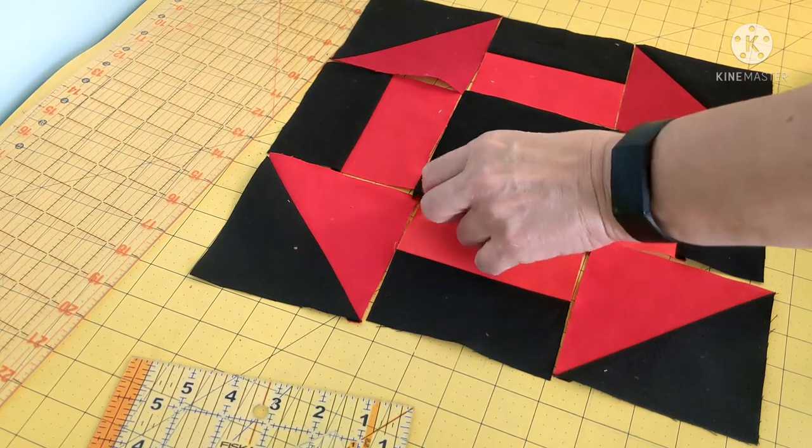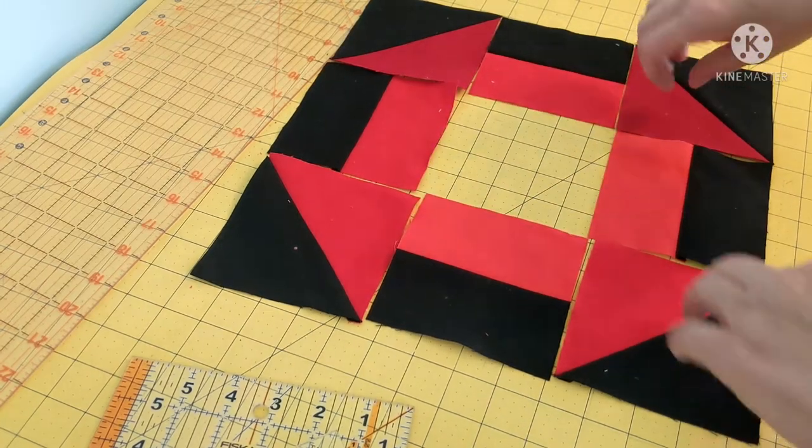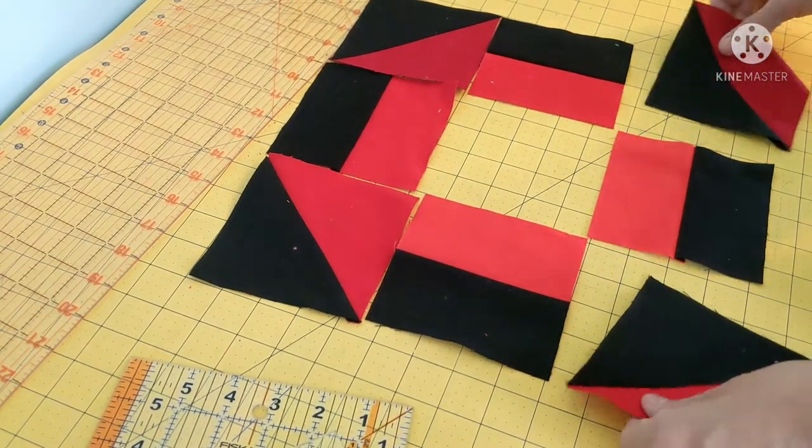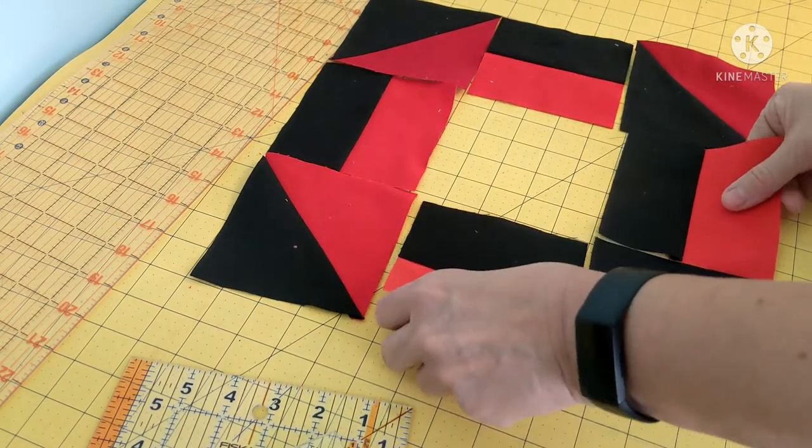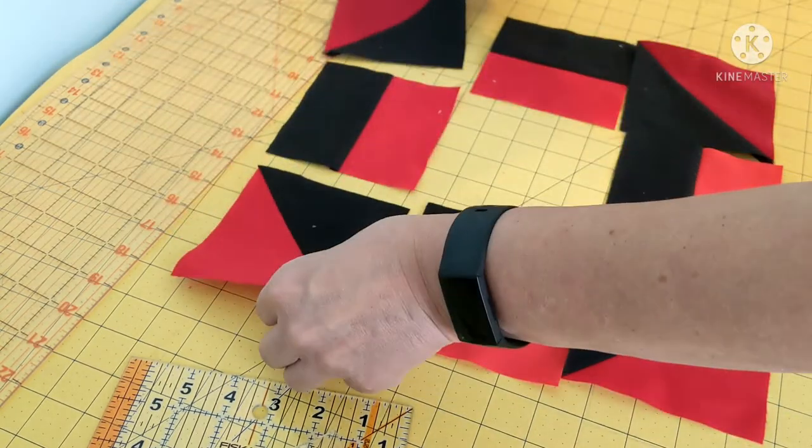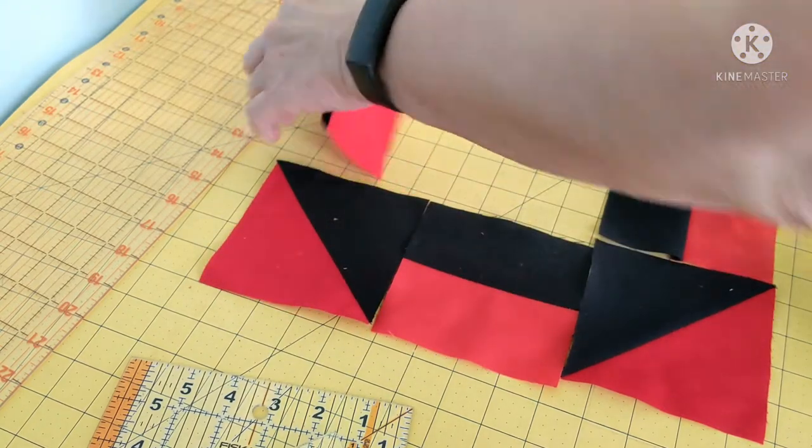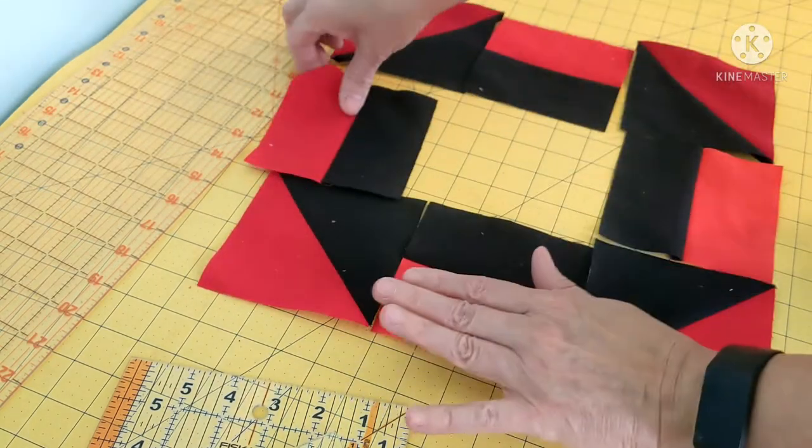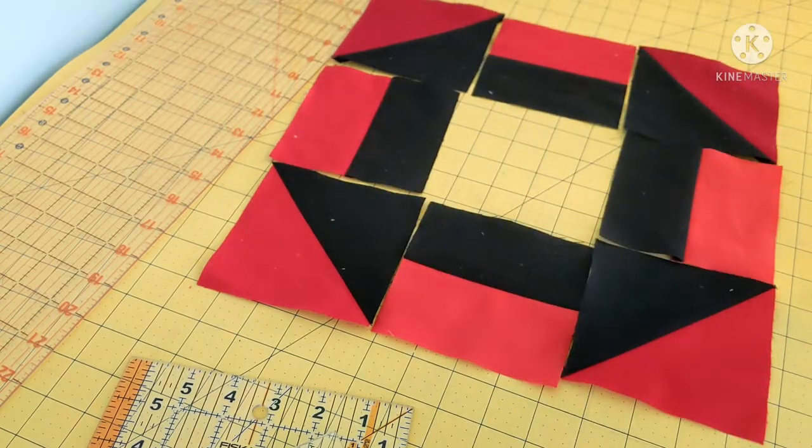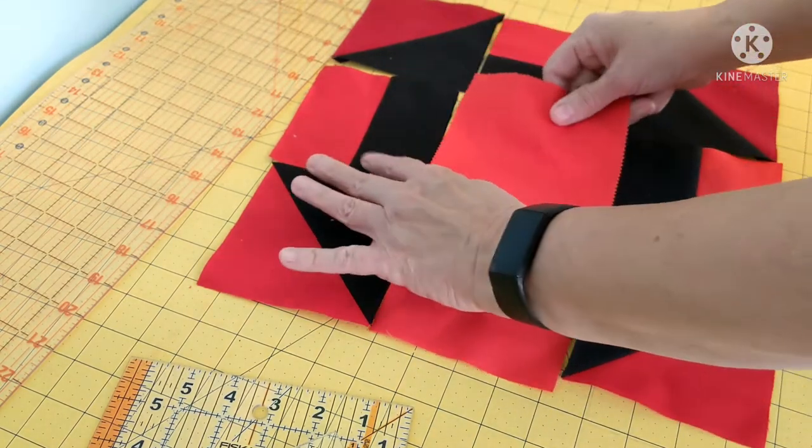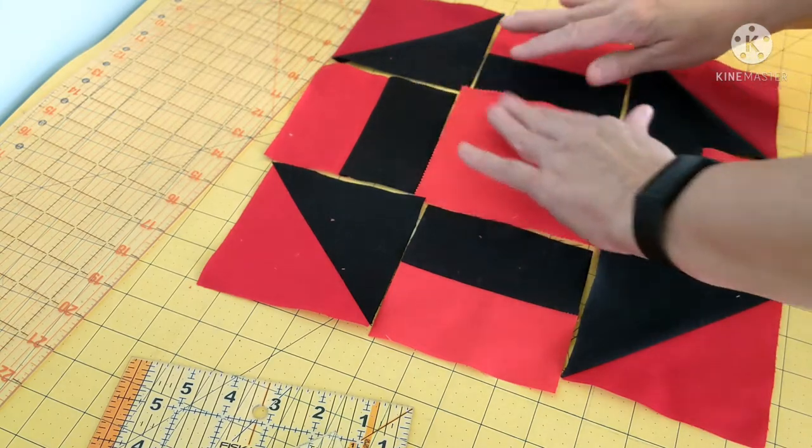Or you can turn your background to the center and your churn dash is the black.